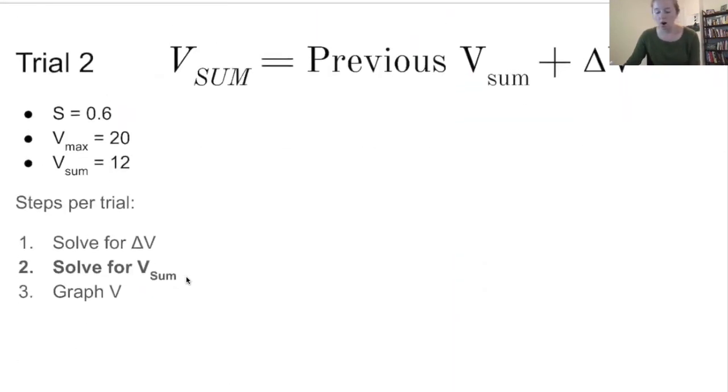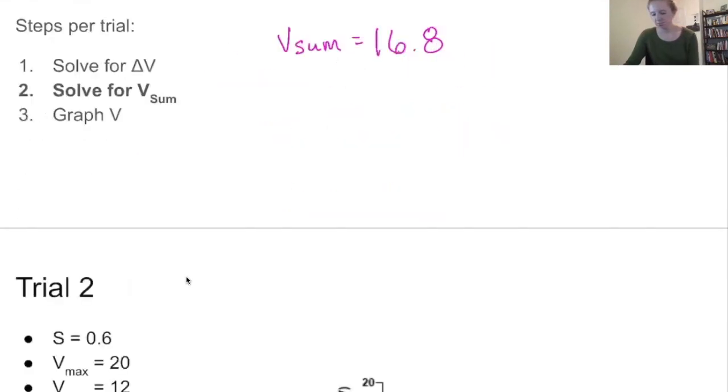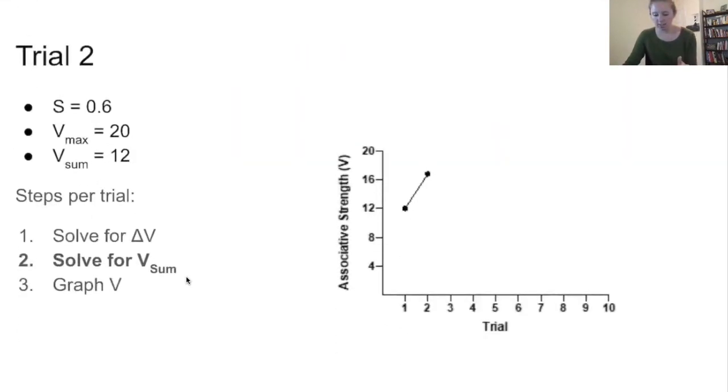Next, we need to calculate our new V sum for the end of that trial. So remember, we're going to add the previous V sum, which was 12 at the end of the last trial. So we're always working from the trial we just did. And add our new delta V, which is 4.8, to obtain the V sum for the end of this trial, which is 16.8. And then the very last thing that we're going to do is graph that. So we've got our 16.8 graphed already.